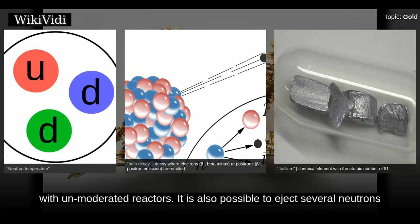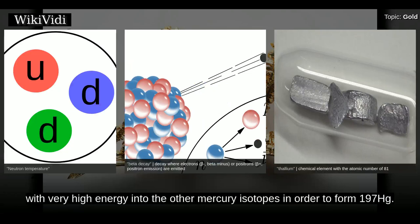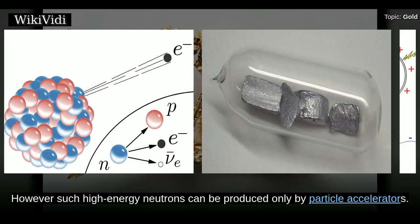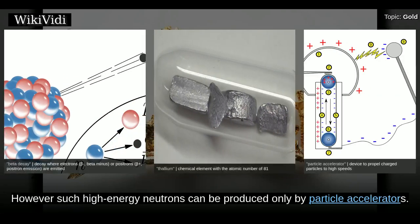The mercury isotope 198Hg, which composes 9.97% of natural mercury, can be converted by splitting off a neutron and becoming 197Hg, which then disintegrates to stable gold. This reaction possesses a smaller activation cross section and is feasible only with unmoderated reactors. It is also possible to eject several neutrons with very high energy into other mercury isotopes in order to form 197Hg. However, such high-energy neutrons can be produced only by particle accelerators.